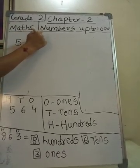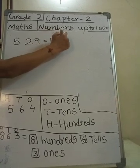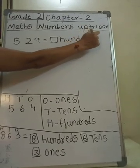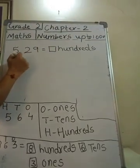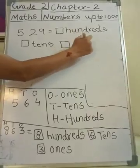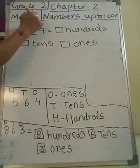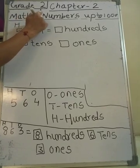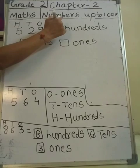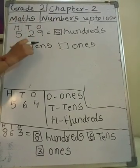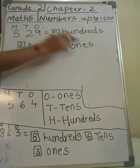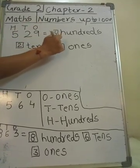Let's look at another example: 5, 2, 9 is given. We will write H, T, O. H is for 100's — which number is at 100's place? 5. T is for 10's — which number is at 10's place? 2. O is for 1's — which number is at 1's place? 9.